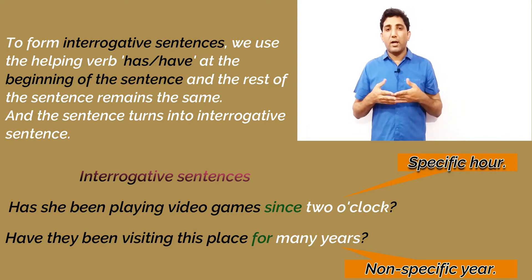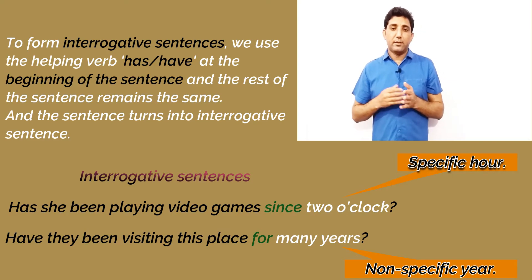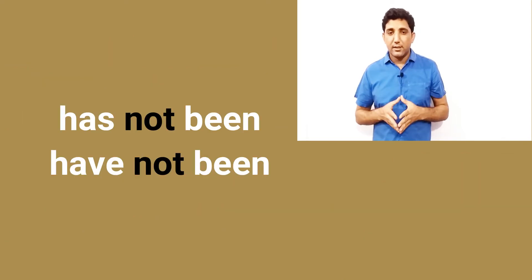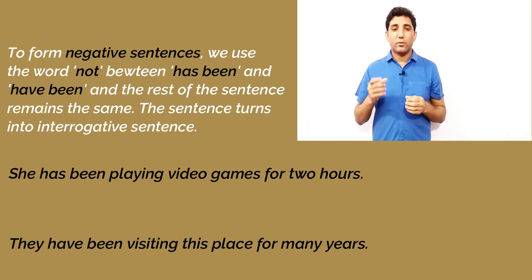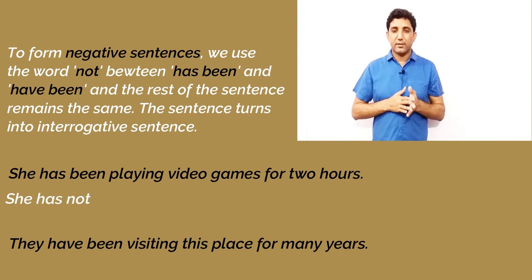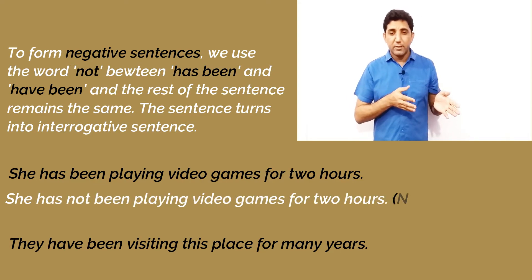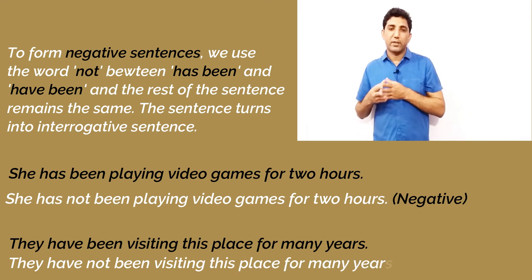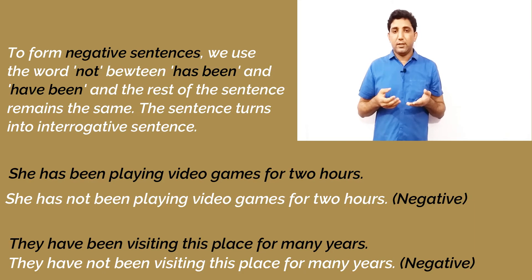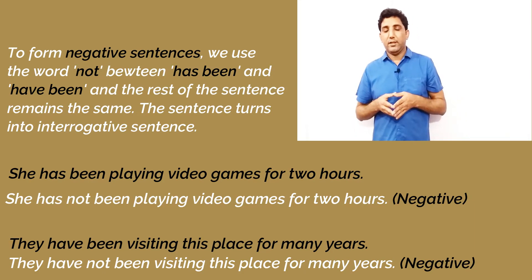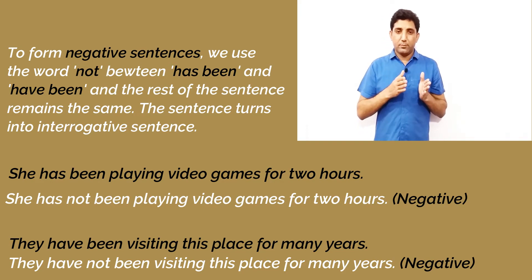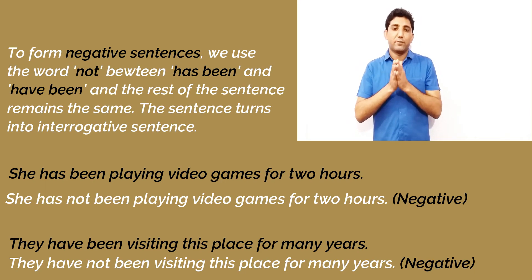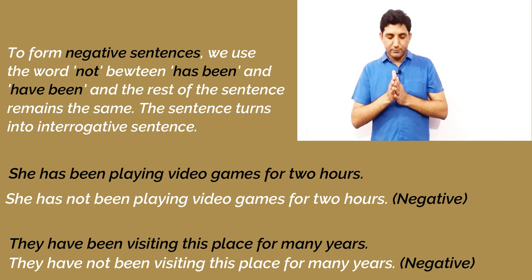Now let's learn how to form negative sentences. We add the word 'not' between 'has'/'have' and 'been', and the sentence turns negative. For example: 'she has been playing video games for two hours' becomes 'she has not been playing video games for two hours'. And 'they have been visiting this place for many years' becomes 'they have not been visiting this place for many years'.